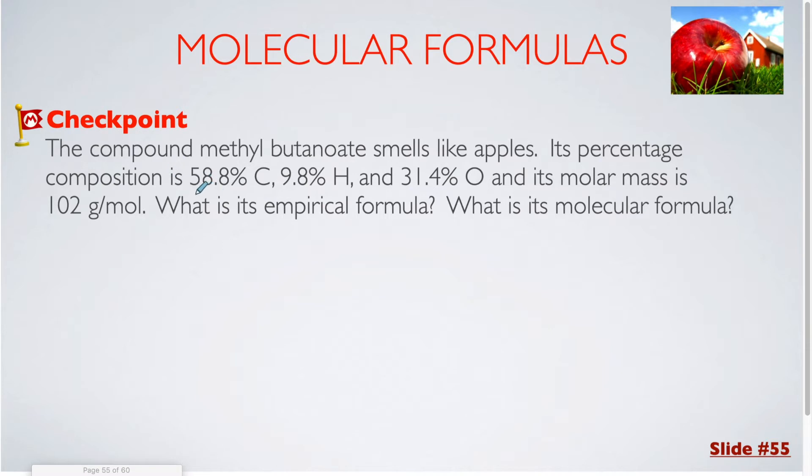In our next problem we are given the percentages of each of our elements within this compound and we're given the molar mass of the molecular formula. So first thing we have to do is find the empirical formula. So in this compound I have a carbon, I have a hydrogen, and I have an oxygen. My carbon is 58.8% of the total mass, so if I assume 100 grams, that's 58.8 grams. My hydrogen is 9.8%, which means 9.8 grams, and my oxygen is 31.4.